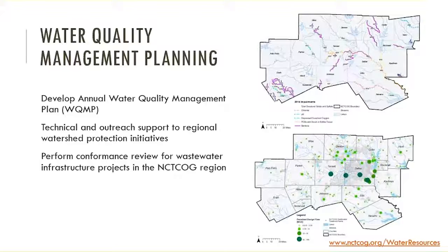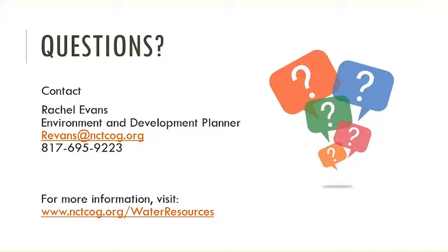The map in the upper right-hand corner shows the water quality impairments established by the 2014 Texas 303D List — the purple representing bacteria-impaired waterways — and the bottom right shows our wastewater treatment plants by capacity. Here's my contact information. If you have any questions, please feel free to call or email, or write questions in the comment box about the programs underway within our Council of Governments.